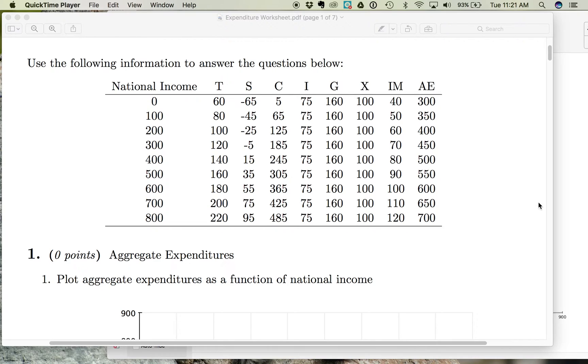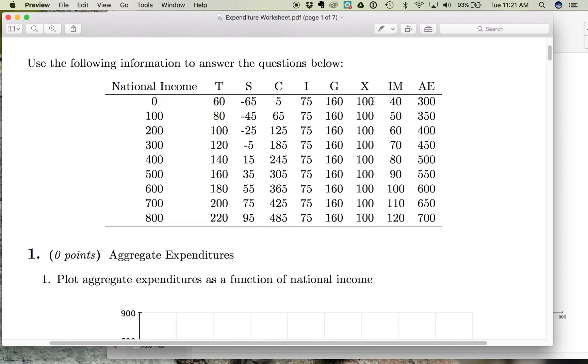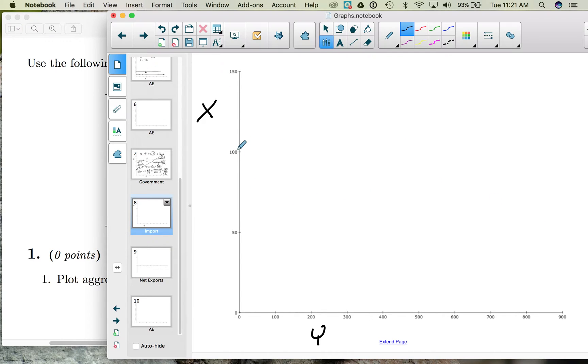So notice how exports don't change with the level of national income. If we were to graph our exports as a function of income, income is on the horizontal and exports are on the vertical. So when national income is zero, exports are 100. And when income is 100, exports are 100. All the way until when income is 800, exports are still 100. So if we connect these dots, we should end up with a straight line.